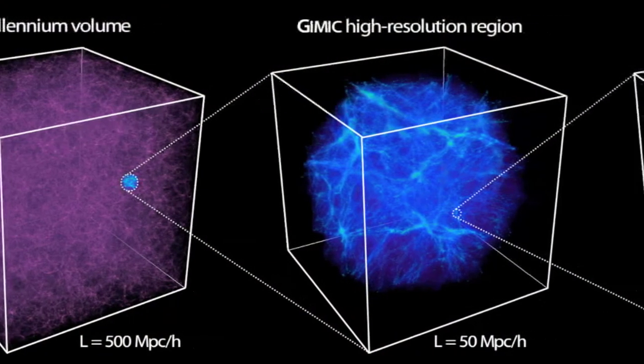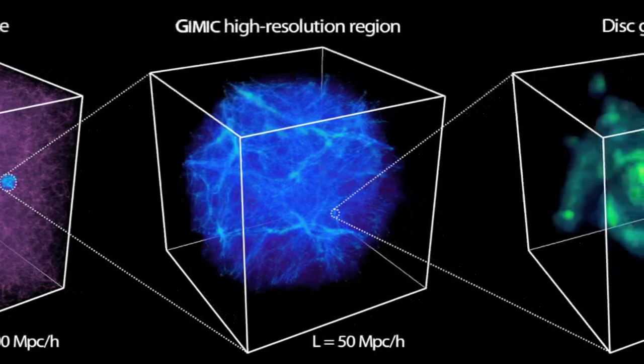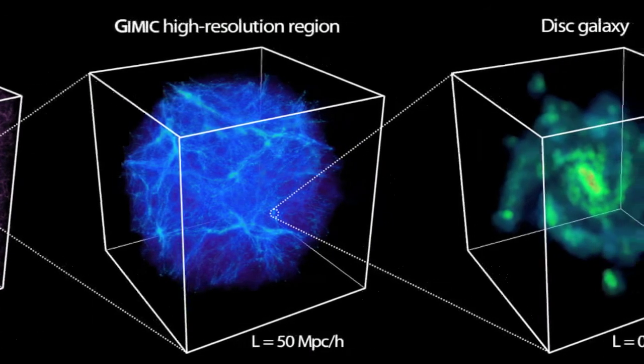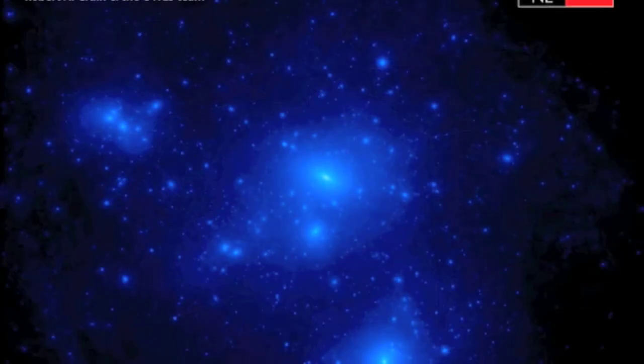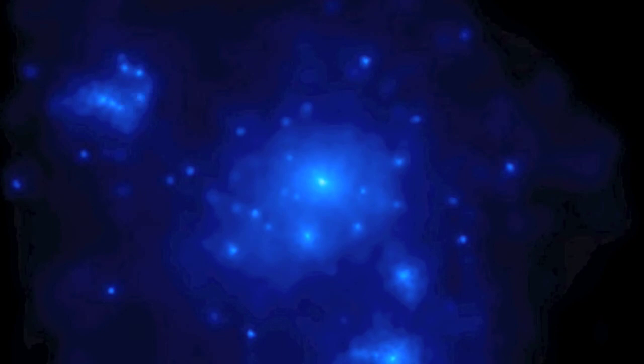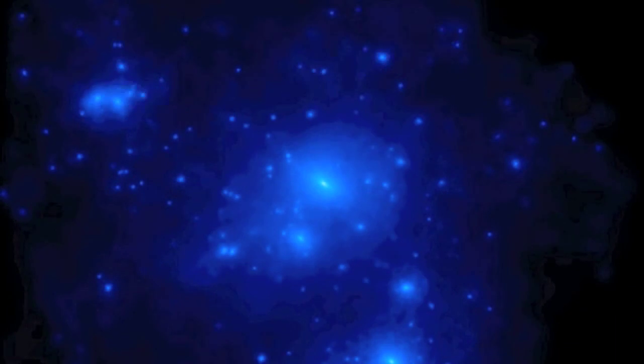The simulations we've been using to attack this problem are the Galaxies Intergalactic Medium Interaction Calculation, or GIMIC for short. This is a large flagship project of the Virgo Consortium, which is an international group of theoretical astrophysicists who primarily use supercomputers to attack problems of cosmological relevance. These simulations look at galaxies — typically you can resolve a galaxy with around 100,000 elements, gas particles in them, and so you can see down to a resolution of a few kiloparsecs. This is a fairly high-resolution simulation and we can follow a few hundred galaxies at once, which allows you to make statistical inferences from having such a large number of galaxies to look at.